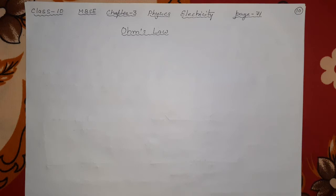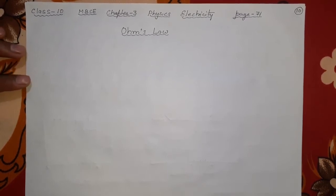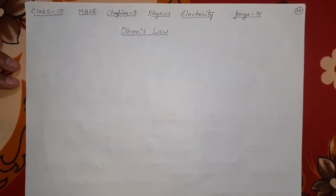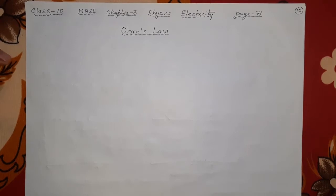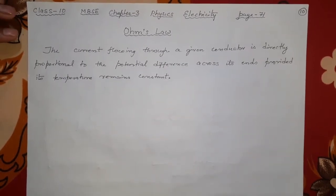Ohm's Law was studied by a person whose name was George Simon Ohm in 1827. Remember, the electron was discovered in 1890 — well after that. So that is why in his name, Ohm's Law is written. It is simple to understand — V means potential, I means current, and their relation is called Ohm's Law.